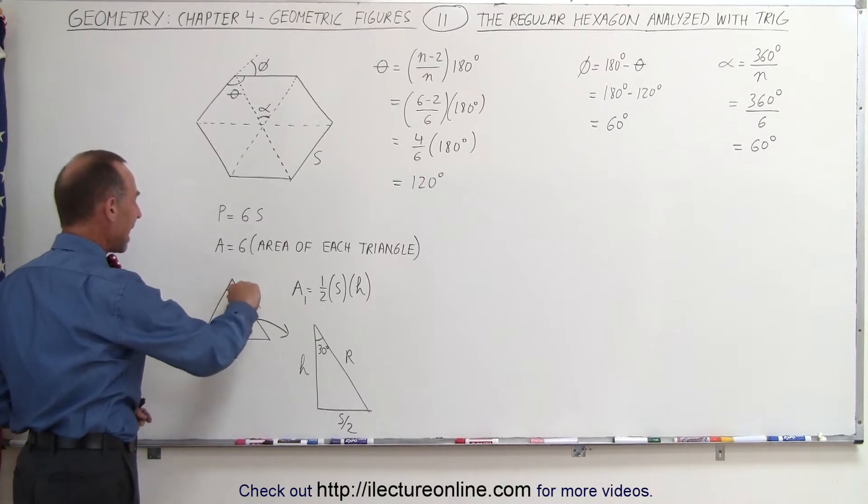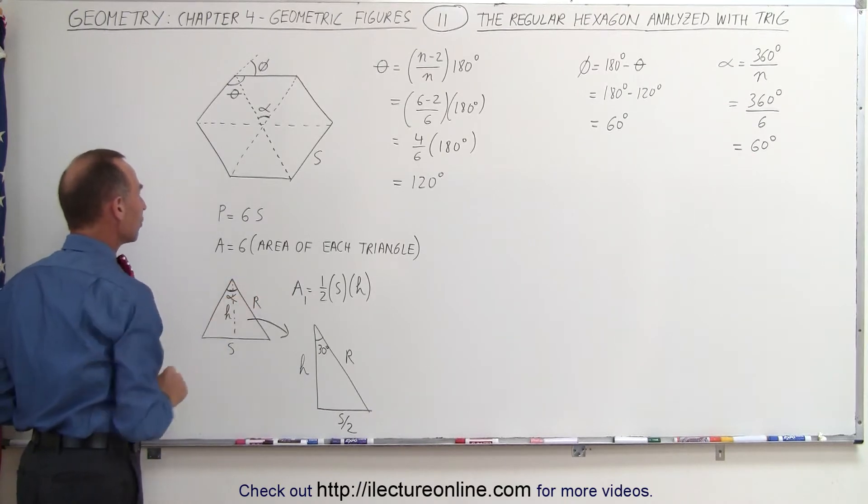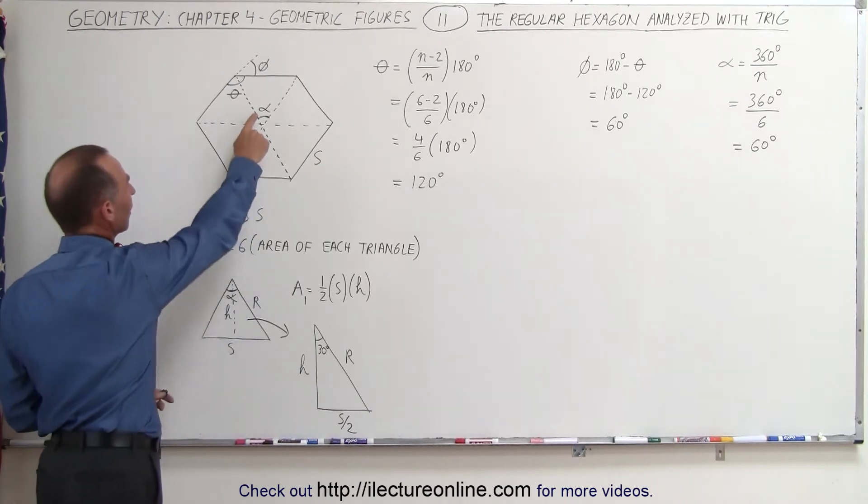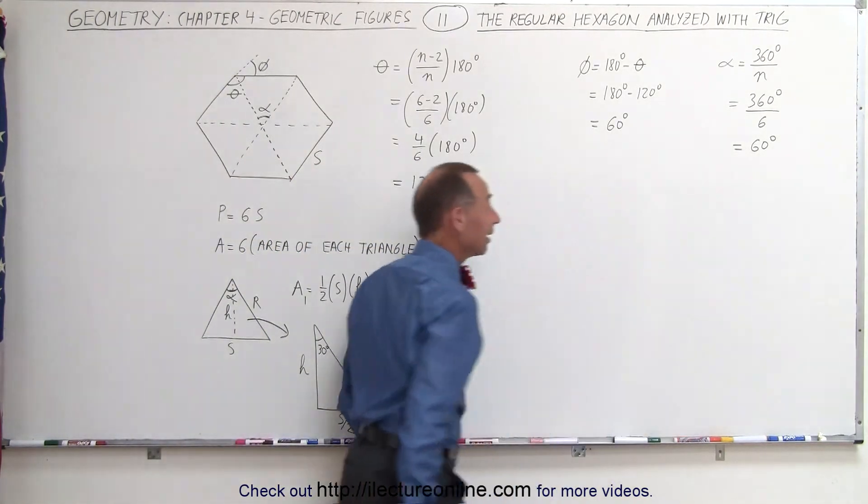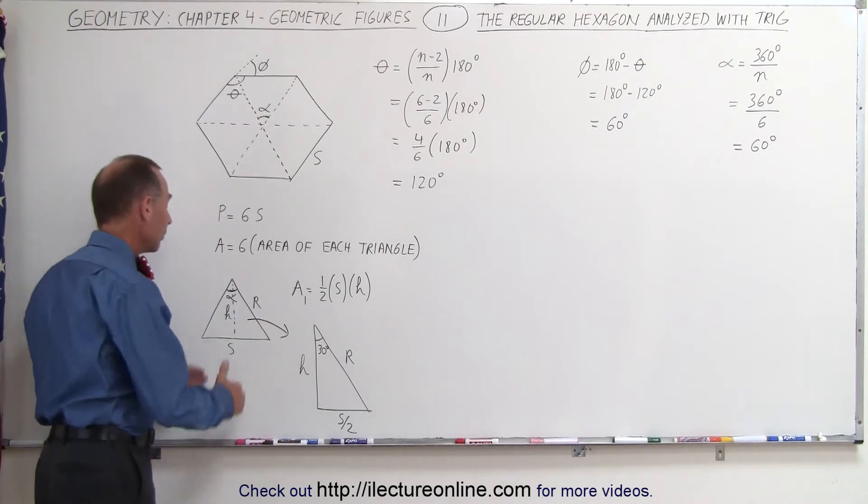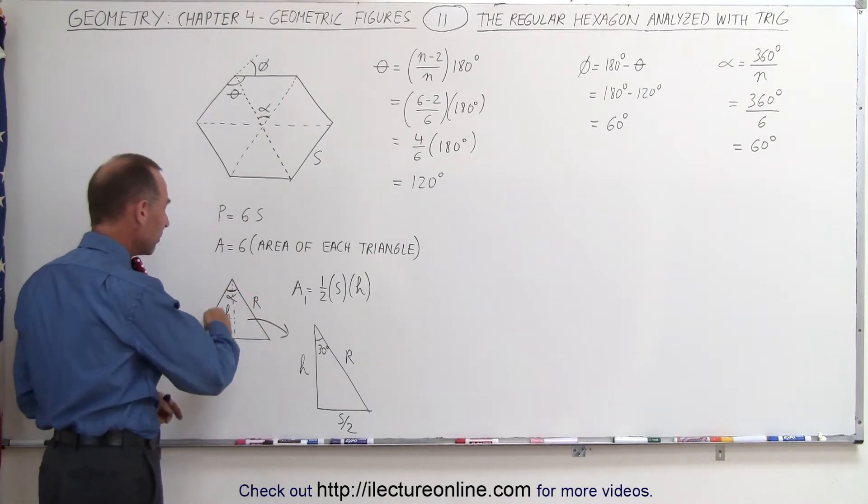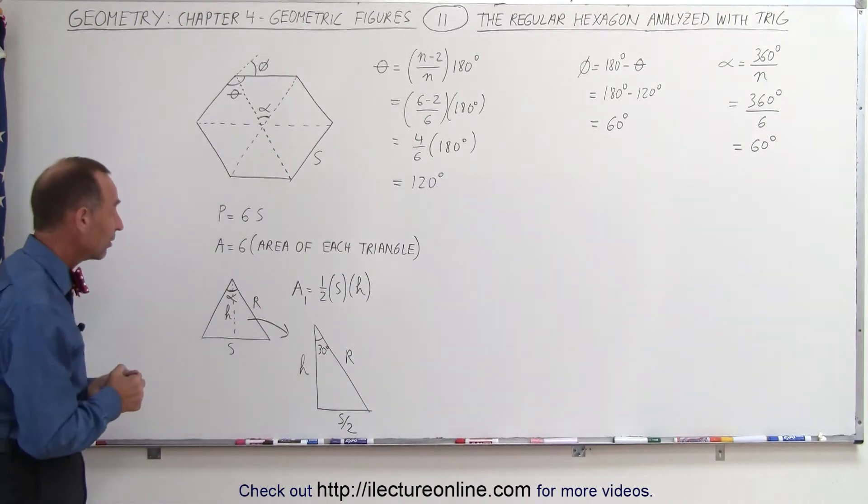We also defined the angle at the tip of the triangle as alpha, which equals 60 degrees. If alpha equals 60 degrees and these two sides are equal, then all three angles equal 60 degrees.